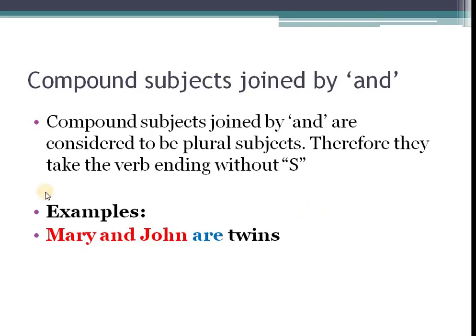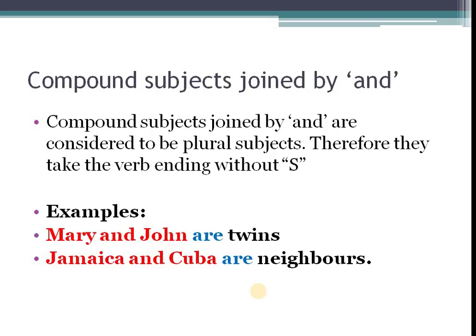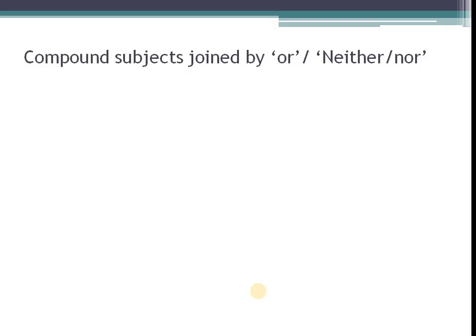John and Mary are twins. Here, if we should take out John and Mary, we said it before, John and Mary can be they. They is plural. John and Mary, that's plural as well. And because it is plural, we have the verb ending without S. Are. Jamaica and Cuba are neighbors. That's another one. And so, please add your own example. Please comment below your own example of a compound subject with a verb ending without S.